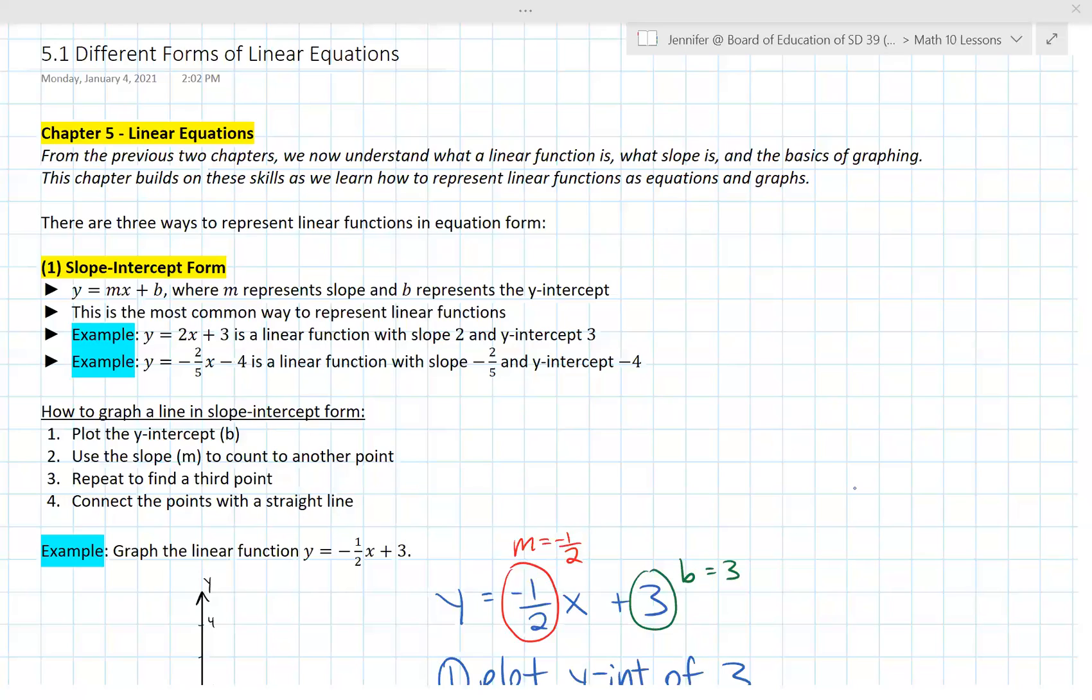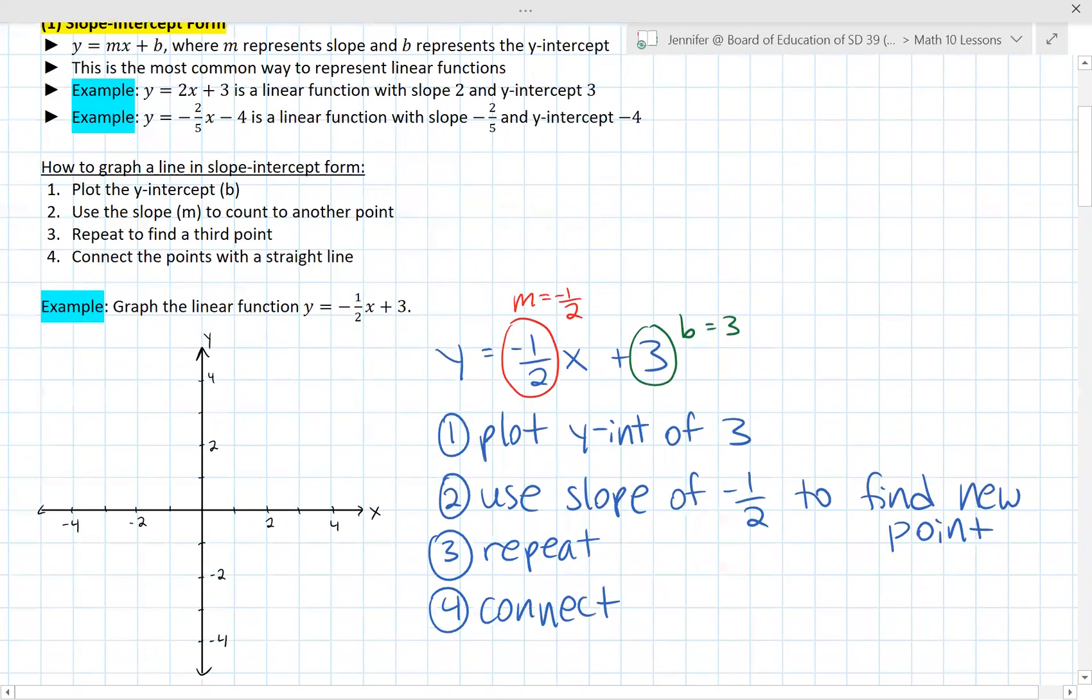Here are the steps on how to graph a line given to you in slope-intercept form. The first step is to plot the y-intercept and then you're going to use the slope to count to another point, similar to what we did last chapter. Repeat this again to find a third point and connect them with a straight line.